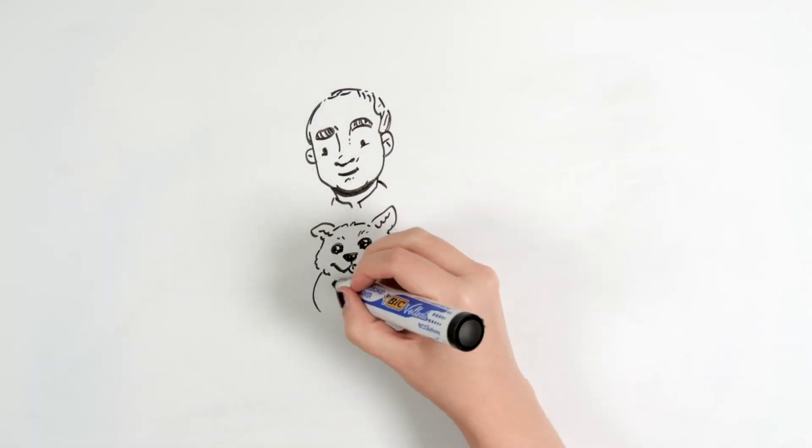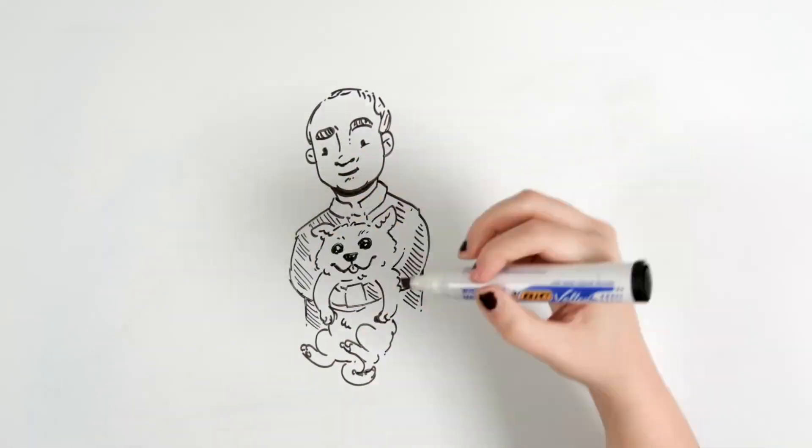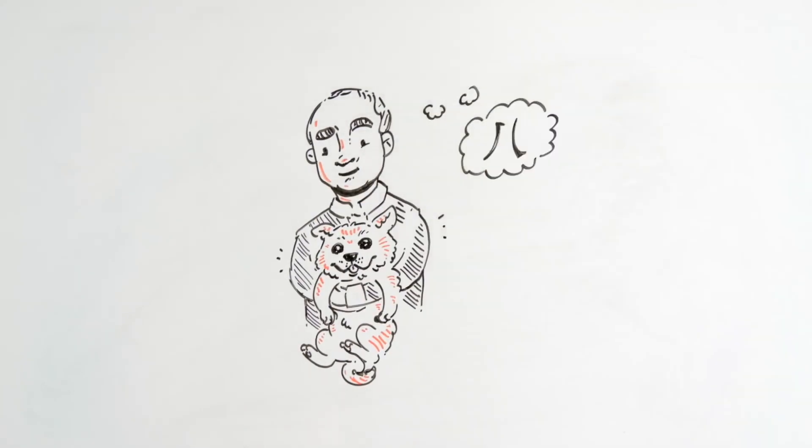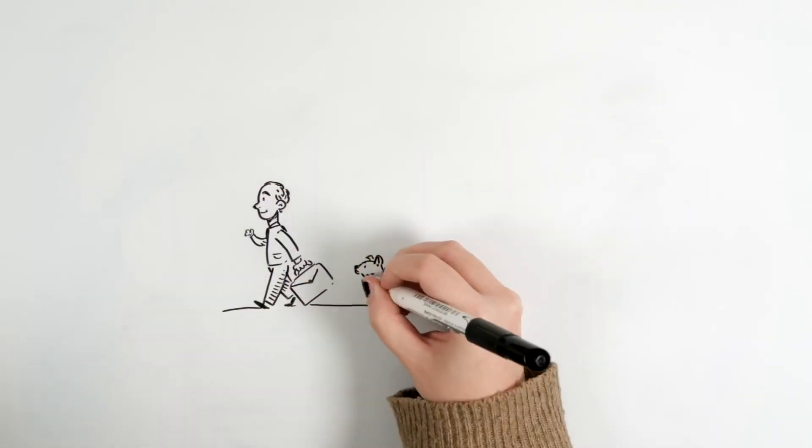The professor picked him up in his lap and noticed that his front legs were slightly deviated, just like the Japanese letter that represents the number 8, Hachi, which is why he named him Hachiko.